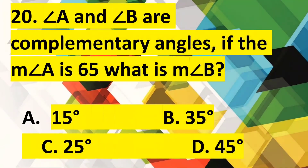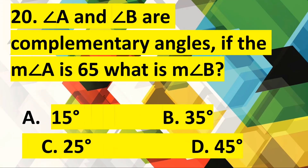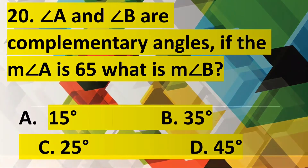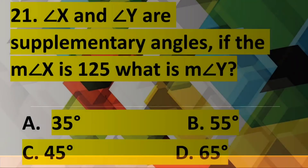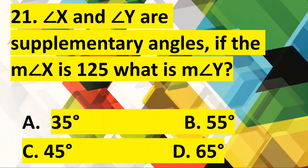Number 20: Angle A and angle B are complementary angles. If the measure of angle A is 65 degrees, what is the measure of angle B? Number 21: Angle X and angle Y are supplementary angles. If the measure of angle X is 125 degrees, what is the measure of angle Y?